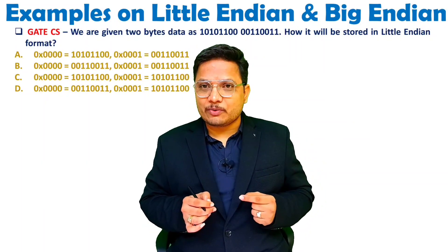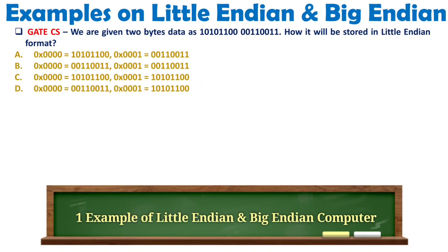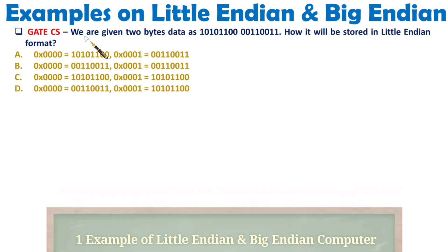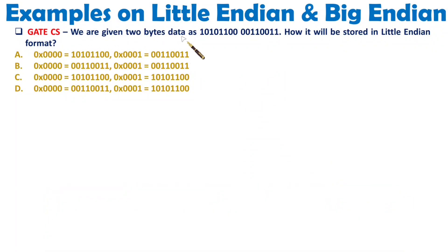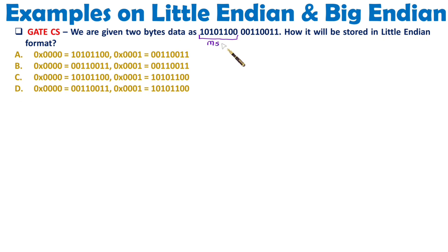Let us see the first question. Here we are given with two bytes of data. The first byte is 10101100 in binary, and one byte has eight bits of data. This is the MSB — most significant byte of this data. And this is the LSB — least significant byte of the data.